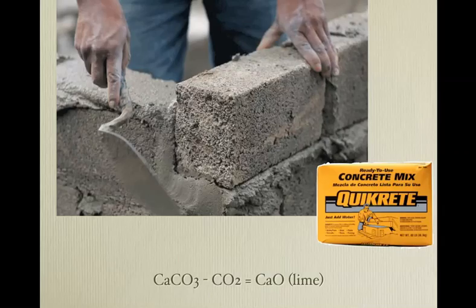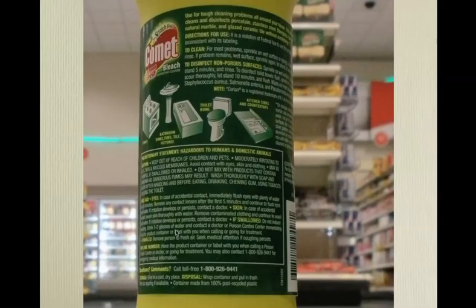If we heat up calcite, otherwise known as limestone, we can drive off the carbon dioxide, leaving lime. We mix it with water, it combines back with carbon dioxide again and creates essentially cement. Comet and the soft Ajax are now made of calcium carbonate.